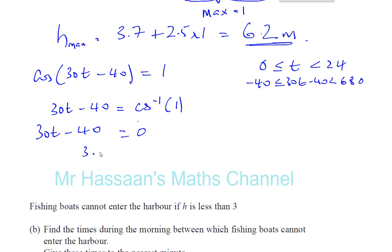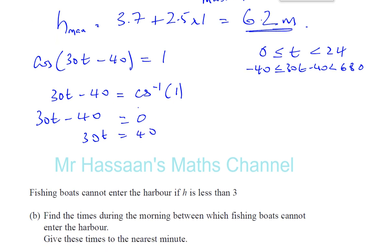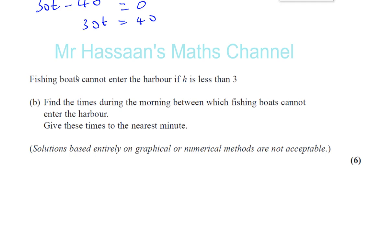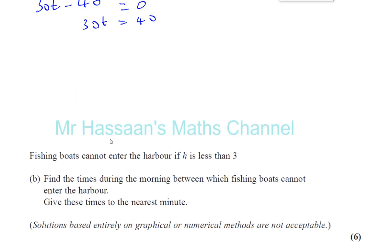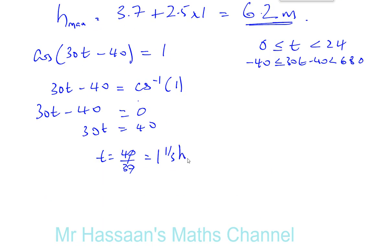So now we can say 30t is equal to 40. And t is equal to 40 divided by 30, which is basically 1 and 1 third. So 1 and 1 third hours after midnight. This is in hours.